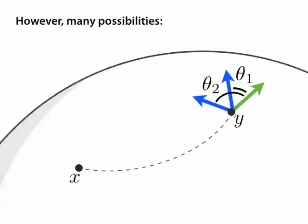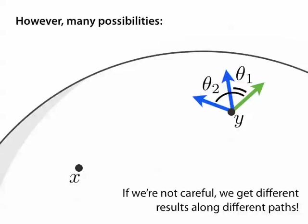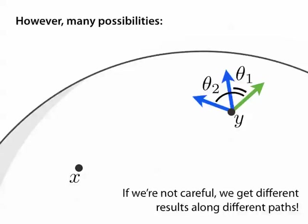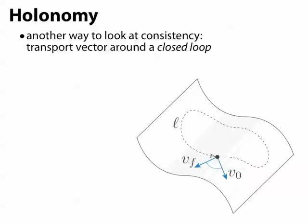This idea of consistency is something we should really keep in mind as we try to apply connections to algorithms. In fact, a really useful way of looking at this idea of consistency is to say, what happens to a vector after we transport it around a closed loop?